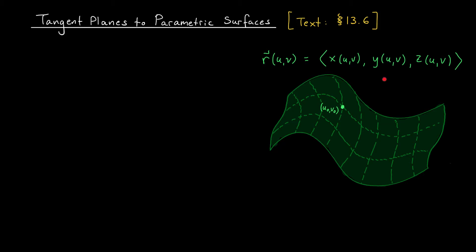We saw that we can use these equations to describe graphs of functions z equals f of xy, but also more general surfaces like spheres and cylinders. Now that we know what parametric surfaces are all about, we can start doing some calculus with them. In this lesson we're going to learn how to find the equation of a tangent plane to a parametric surface at a given point.